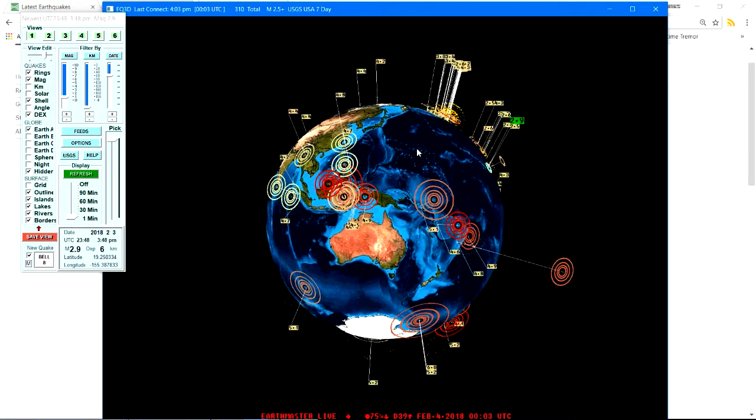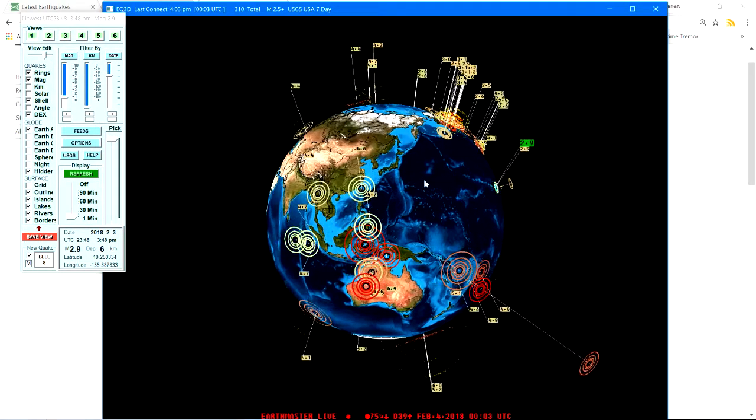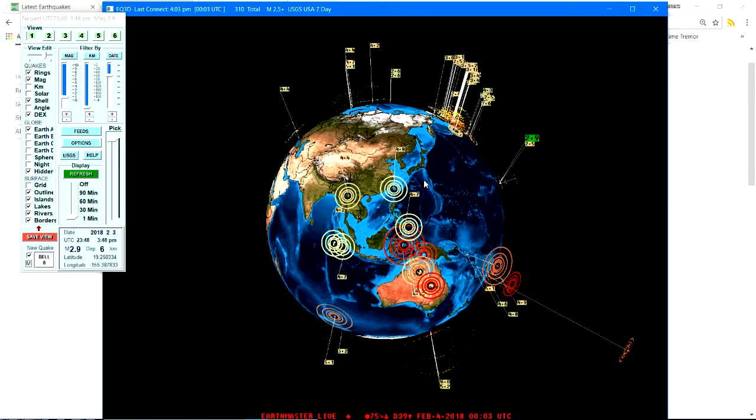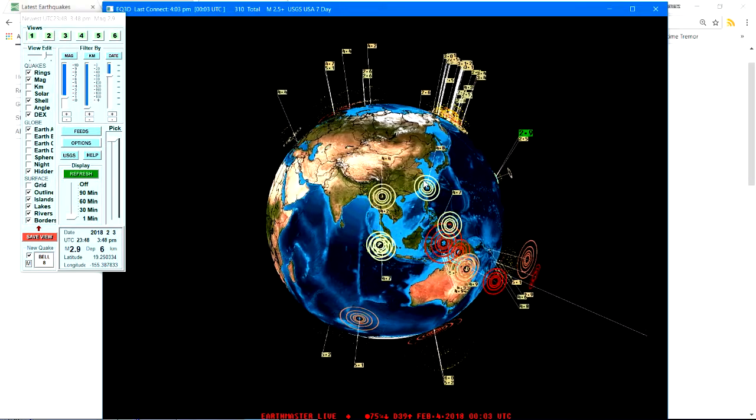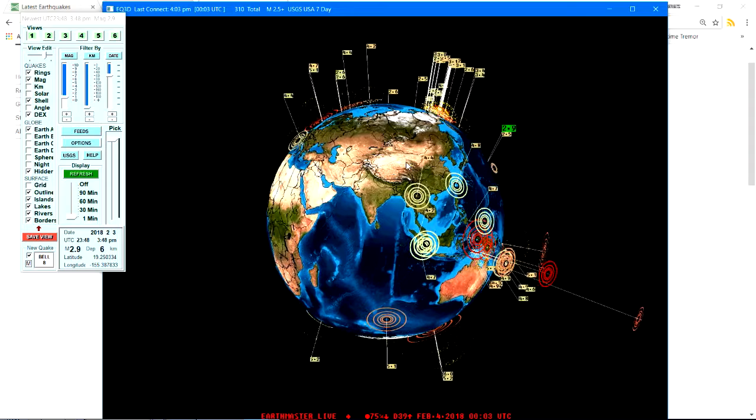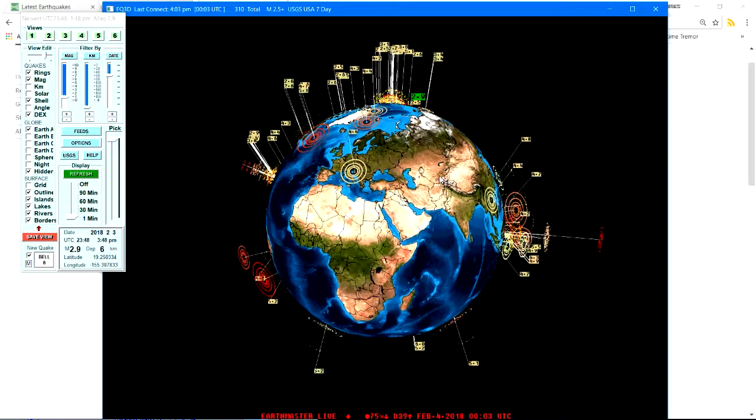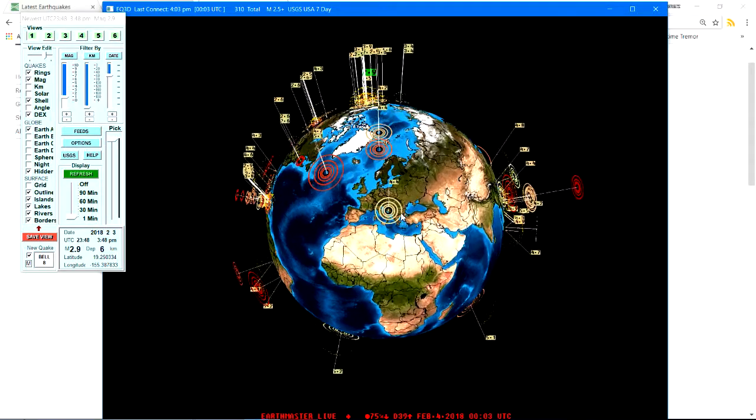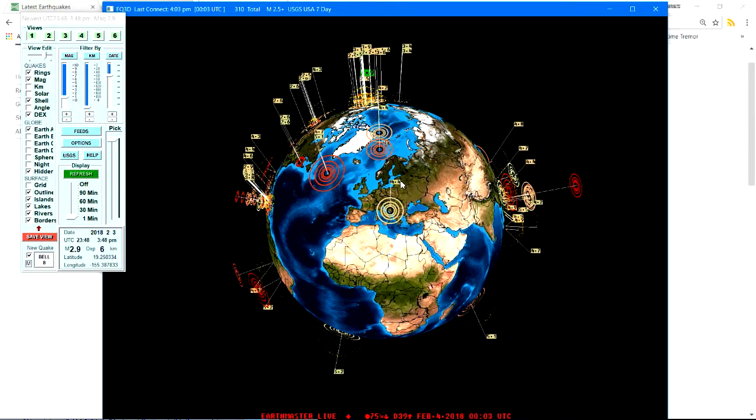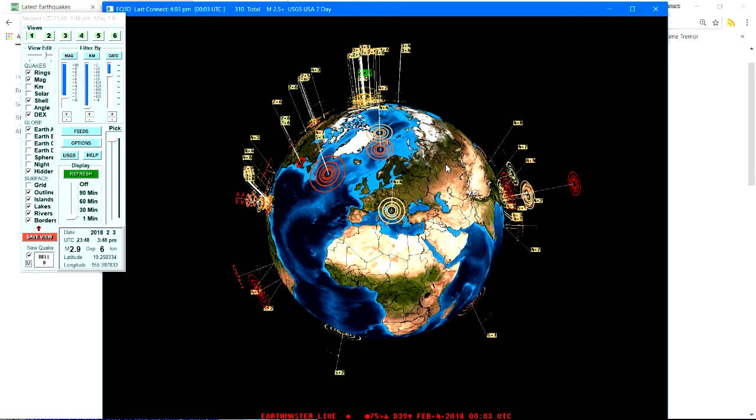Because that area is capable of producing a massive mega earthquake if it decides to. So hopefully it doesn't for a while, but you never know guys. It's Mother Nature. She can do what she wants, I guess, whether man likes it or not. 4.4 over around the Greece region. No uptick in activity over there at the moment.